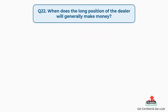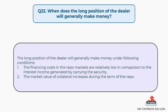Question number twenty-two: when does the long position of the dealer generally make money? The answer is, the long position of the dealer will generally make money under the following conditions. First, the financing costs in the repo markets are relatively low in comparison to the interest income generated by carrying the security. Second, the market value of collateral increases during the term of the repo.